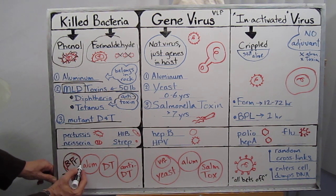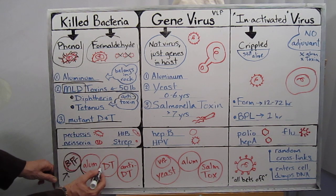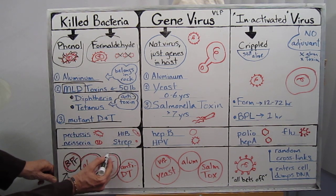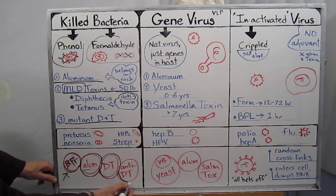To get the bacteria protein noticed by the immune system, they have added several adjuvants: they add aluminum, they add diphtheria toxin for example, and then its antitoxin.